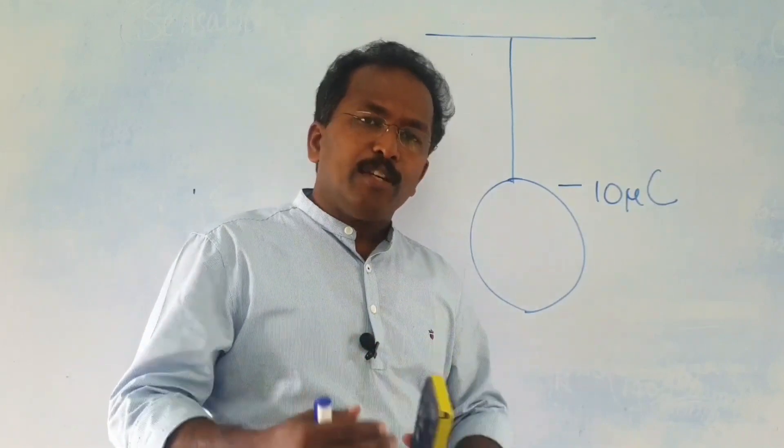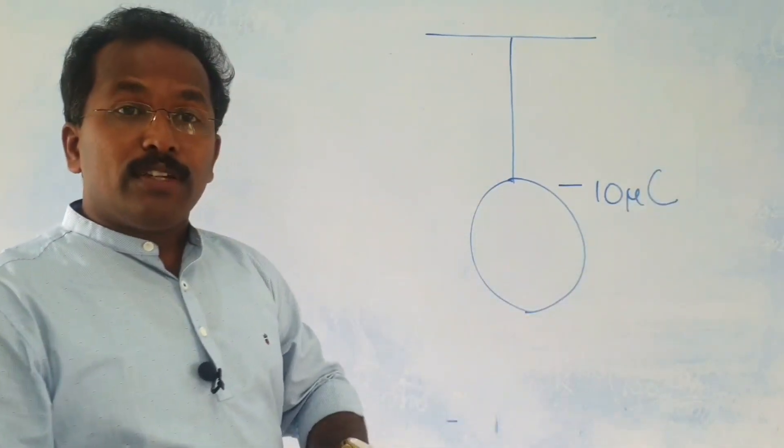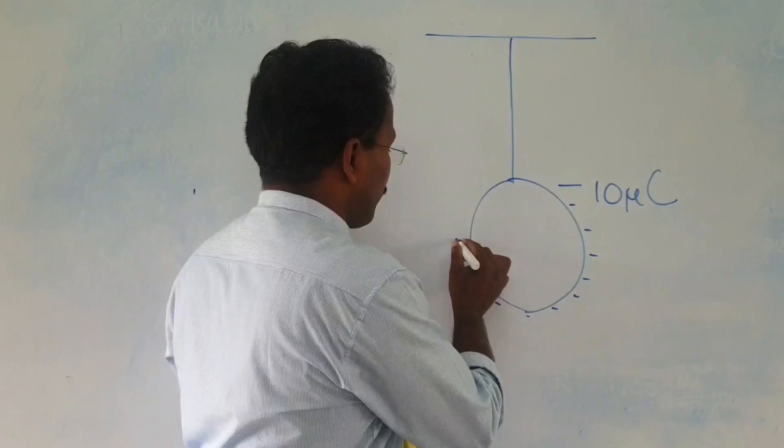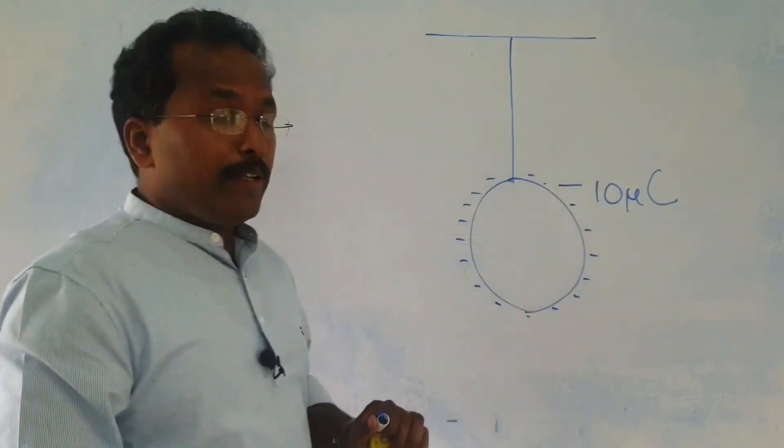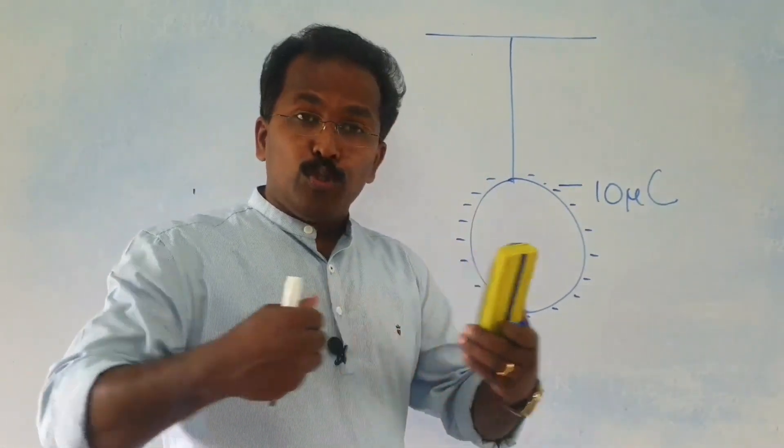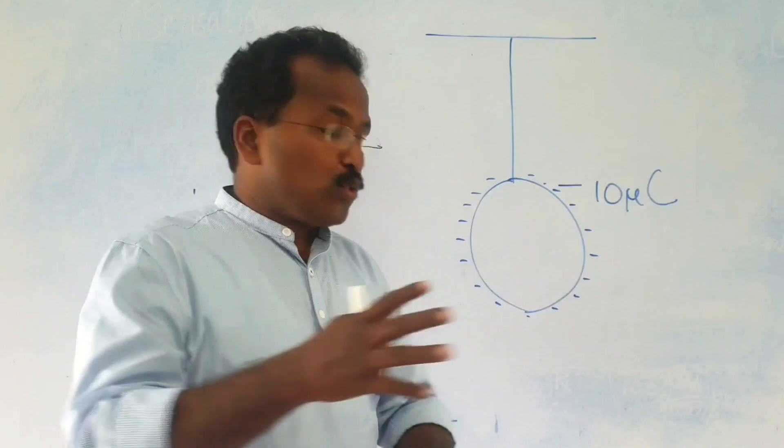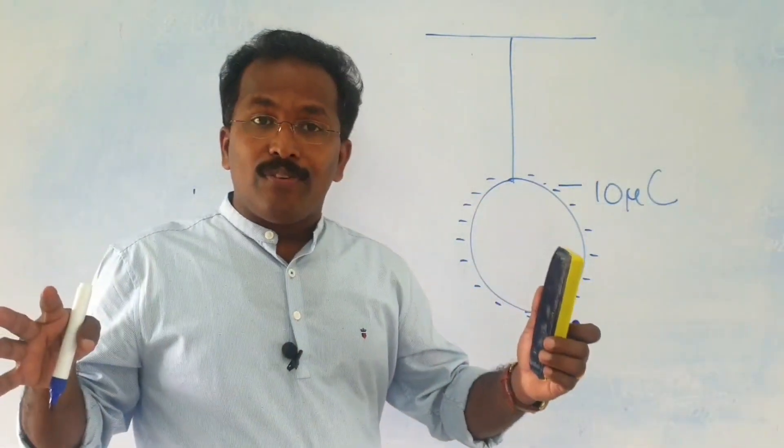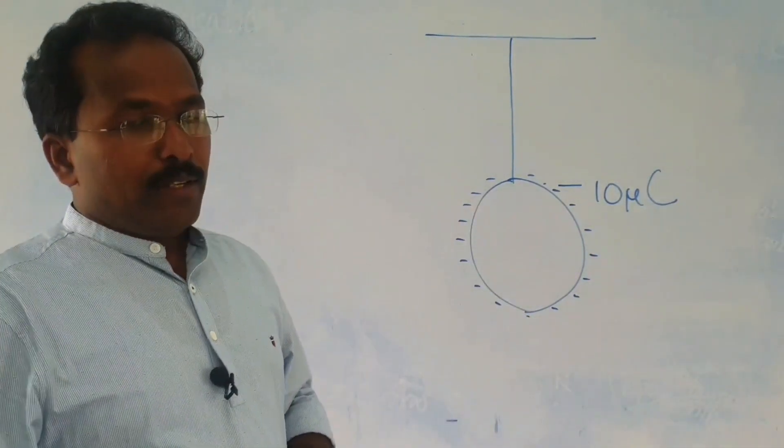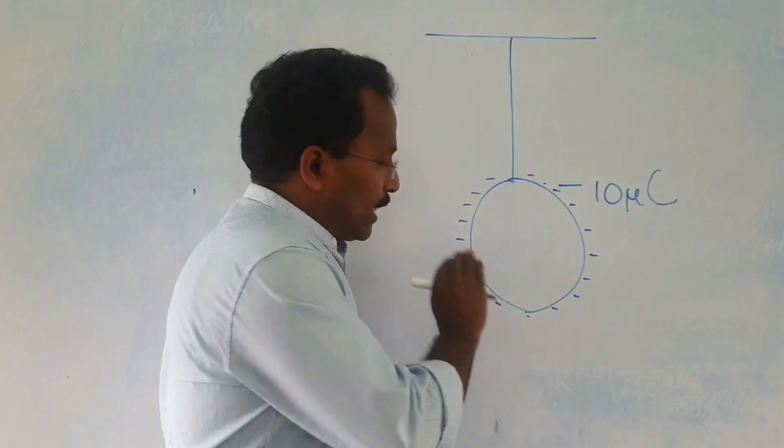But somehow, for the time being, you just imagine that you are giving a charge of minus 10 microcoulombs to that. Means you are giving a lot of electrons to this. So, the electrons will be residing only on the surface. Even if few electrons go inside the body of the ball, those electrons due to mutual repulsion will come out into the surface. And you understand, whenever you give charges to a conductor, it will reside as far apart as possible. So, no charge reside inside this copper ball.